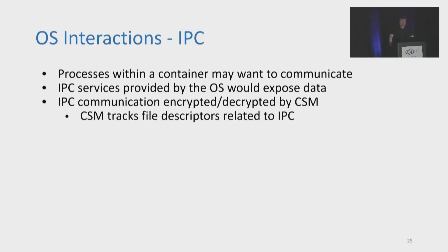Processes within a container may want to communicate and make use of the OS's IPC services. However, doing so would expose that data to the OS. So to allow processes to securely make use of IPC, the CSM encrypts and decrypts IPC communication as part of its interposing on system calls. File descriptors that relate to IPC are tracked, and if a process tries to read or write to one, the data is encrypted by the CSM before giving it to the OS and decrypted by the CSM before delivering it to the other process.